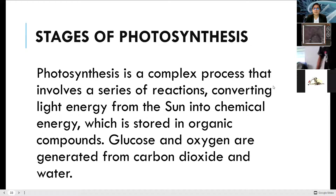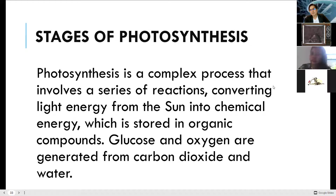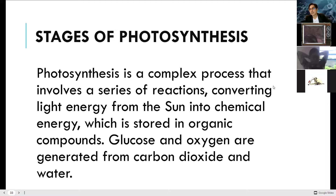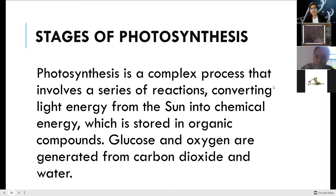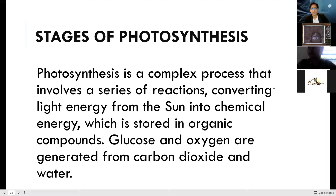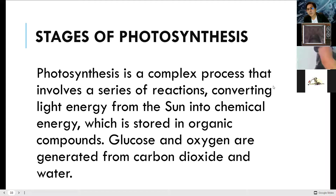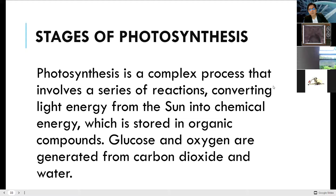Photosynthesis is a complex process that involves a series of reactions, converting light energy from the sun into chemical energy stored in organic compounds. Your organic compound here is glucose. The chemical formula for glucose is C6H12O6 — carbon 6, hydrogen 12, oxygen 6.